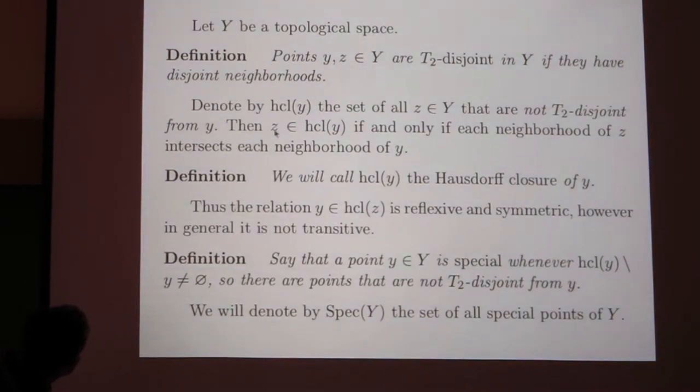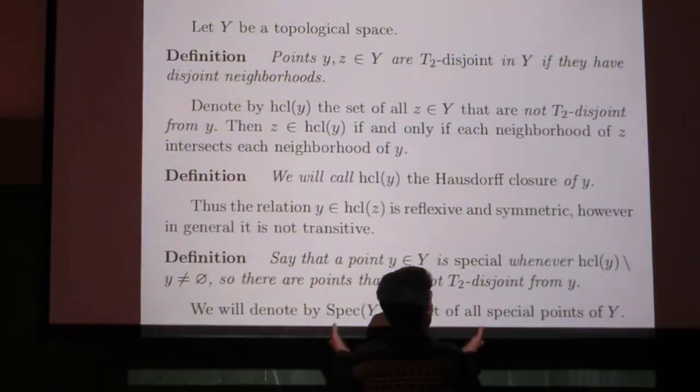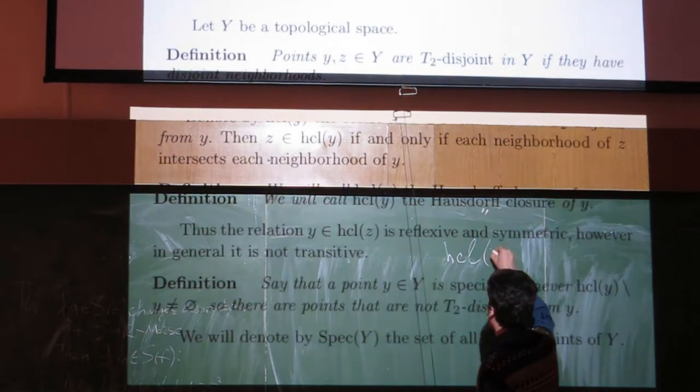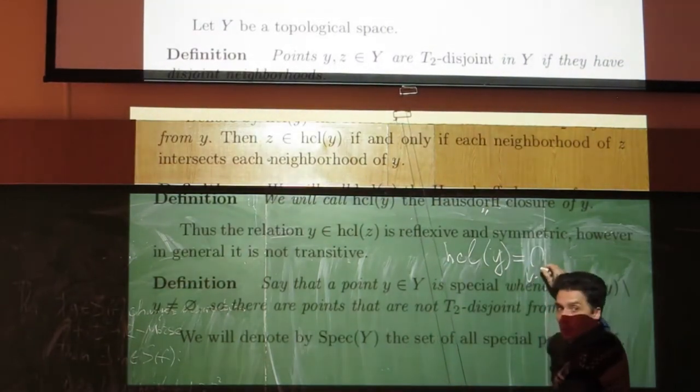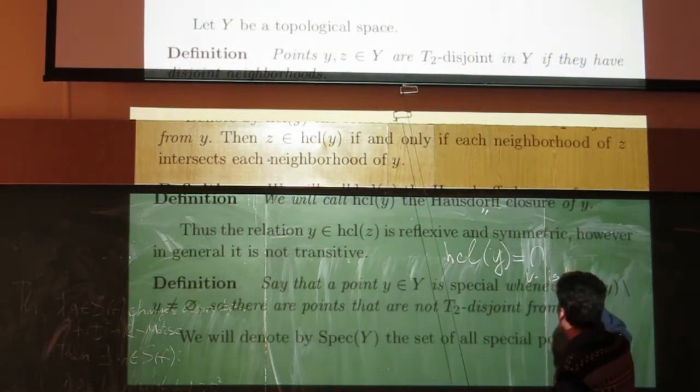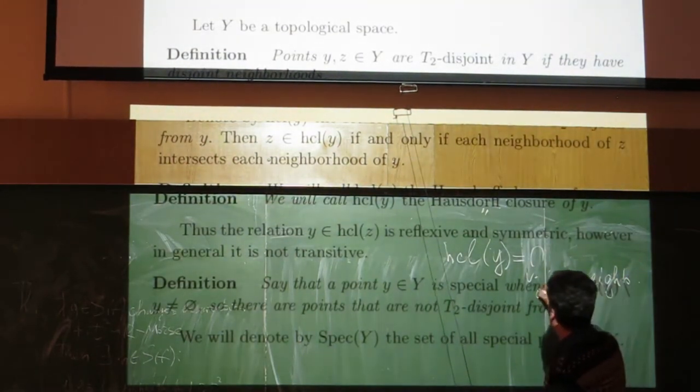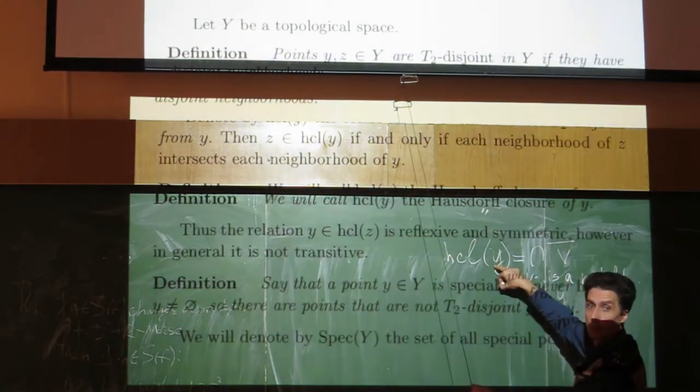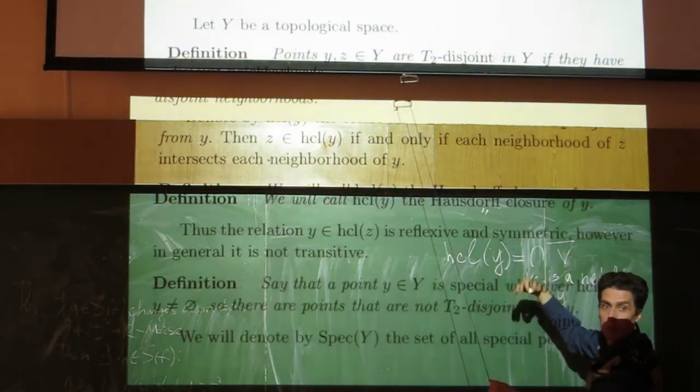In other words, I can describe this Hausdorff closure by taking all the neighborhoods of this point and intersecting the closures. And this set is called Hausdorff-Bosch closure. It contains this point, it could contain some additional points.